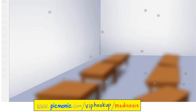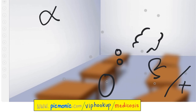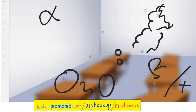Clostridium perfringens causes gas gangrene. It's a gram-positive rod, an anaerobe that makes spores. It produces two toxins — the alpha-toxin and the heat labile toxin — which can cause myonecrosis with gas gangrene, as well as food poisoning and diarrhea. Since this is an anaerobe, treatment involves hyperbaric oxygen.